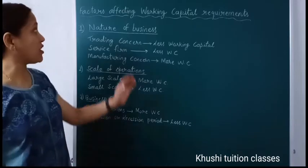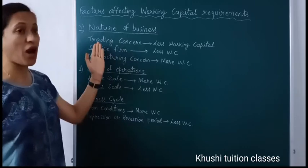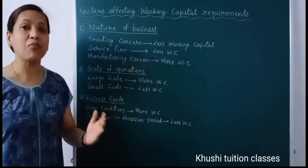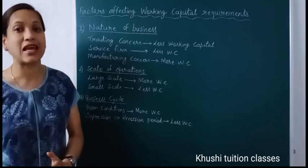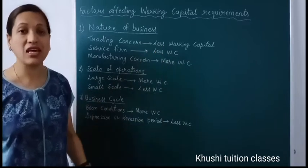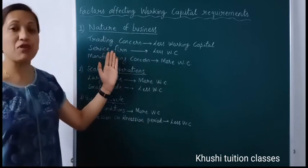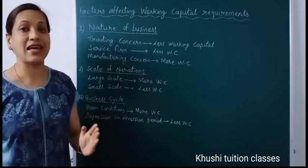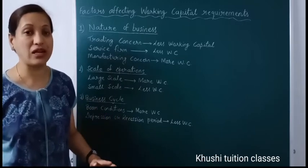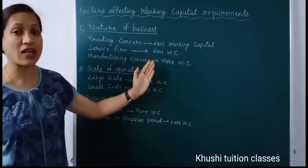Now we start with factors affecting working capital requirement. The first factor is nature of business. If you are operating a trading concern, there will be less working capital needed, because we sell goods without processing, so cash is generated quickly and working capital is not blocked in processing. Service firms like doctors, lawyers, CA, teachers, and other professionals who provide services don't need stock of any kind of inventory, and they provide services on a cash basis, so they need very less working capital.